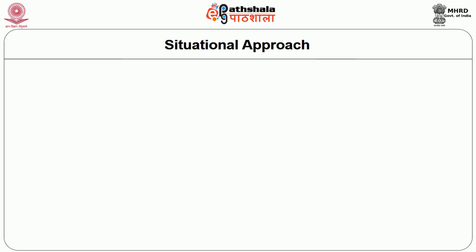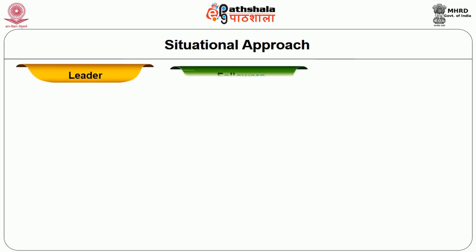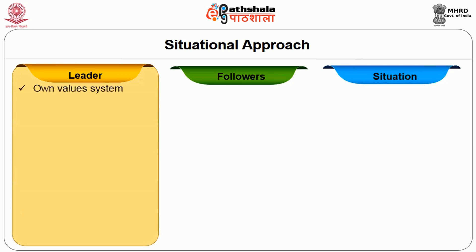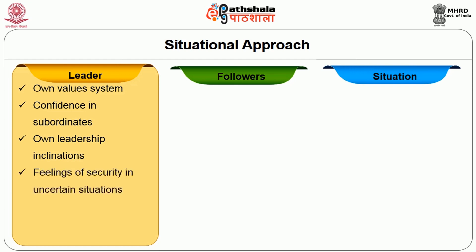As you view on the monitor, these are the factors that the organization should consider for a leader, followers and the situation. The leader should have their own value system, confidence in subordinates, leadership inclinations, feelings of security in uncertain situations, and independence-dependence need.